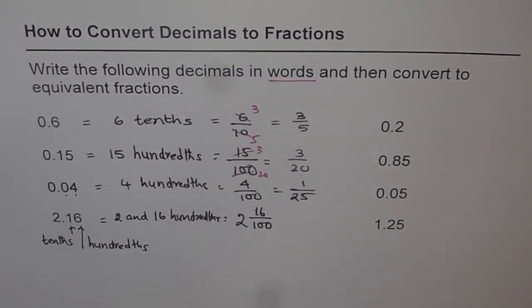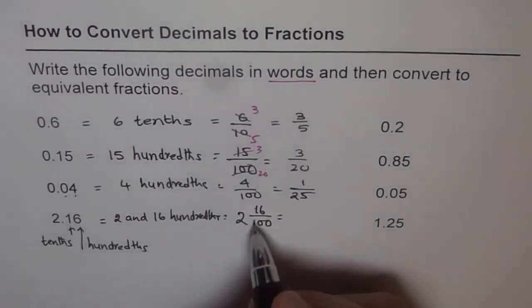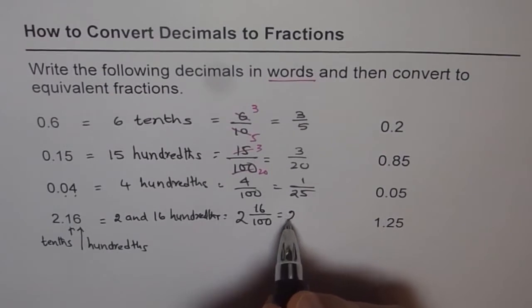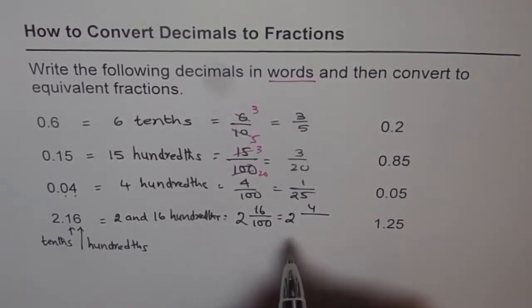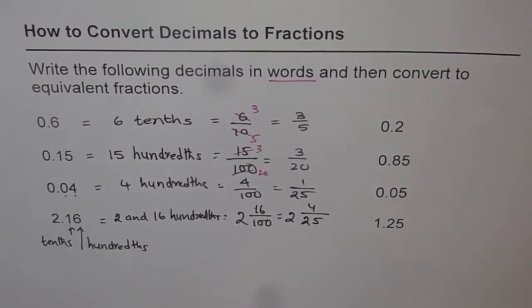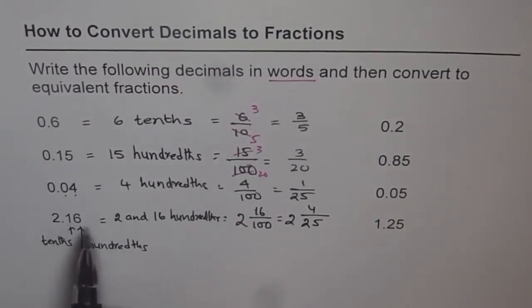2 and 16 hundredths. And then you can simplify this. Both can be divided by 4, so you get 2, and 4 times 4 is 16, and 4 times 25 is 100, giving 2 and 4 over 25. I hope you appreciate the technique.